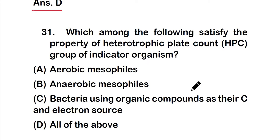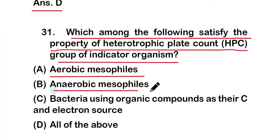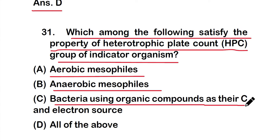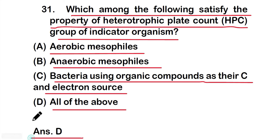Question number 31: Which among the following satisfy the property of heterotrophic plate count (HPC) group of indicator organisms? Options: A) aerobic mesophiles, B) anaerobic mesophiles, C) bacteria using organic compounds as their carbon and electron source, or D) all of the above. The right answer is option D — all of the above are true about the properties of the heterotrophic plate count group of indicator organisms.